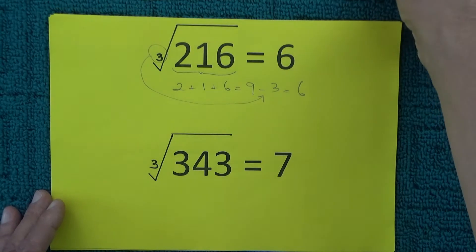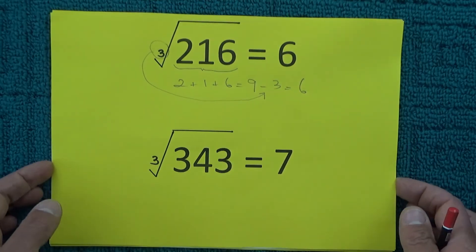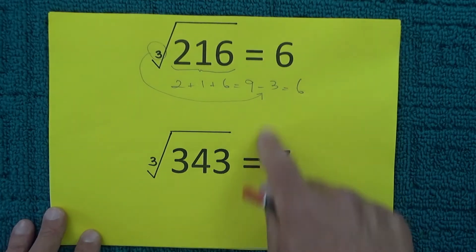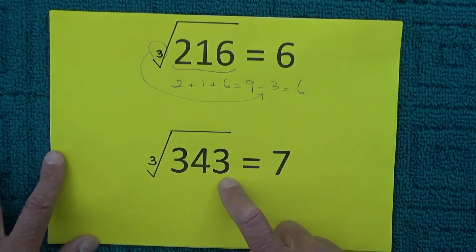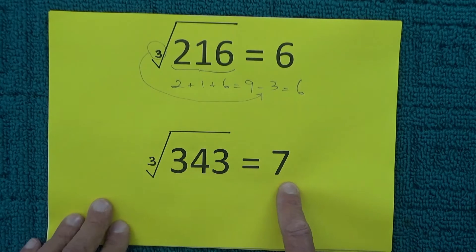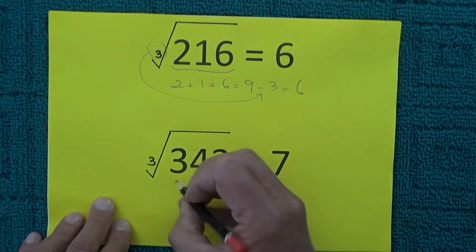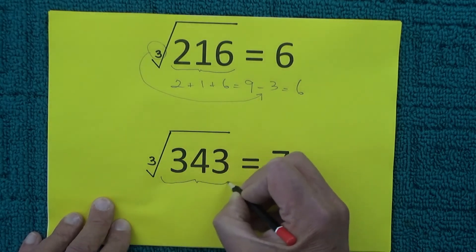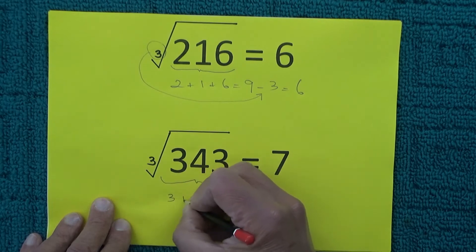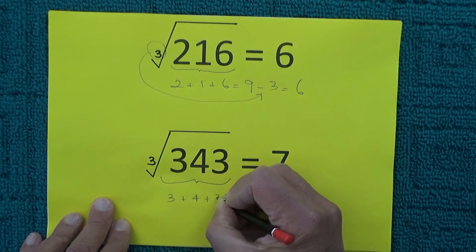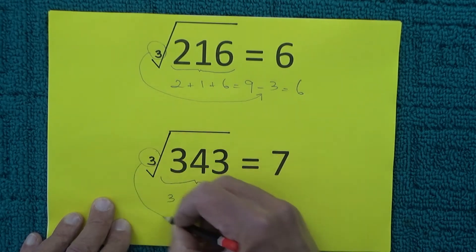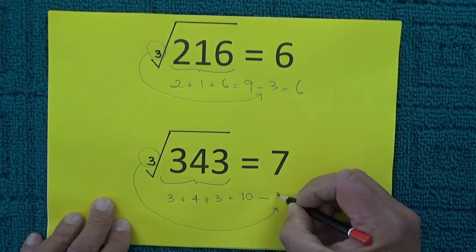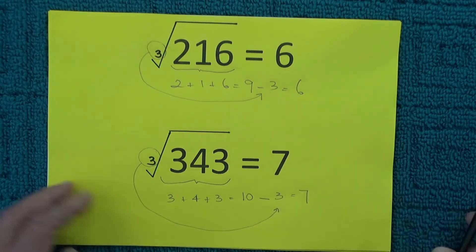Let's say that's quite either it's a good shortcut method or it's a coincidence. So then I tried the cubed root of 343 which is equal to 7. I know that that equals 7 and then I added the 3 plus the 4 plus the 3 which equals 10 and then once again I deducted the 3 from the cubed root and that equals 7. I thought wow.